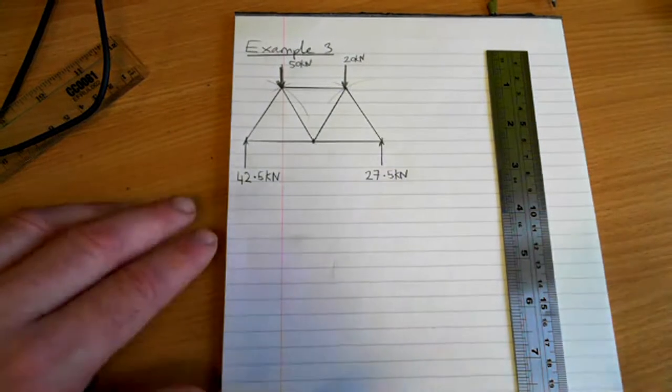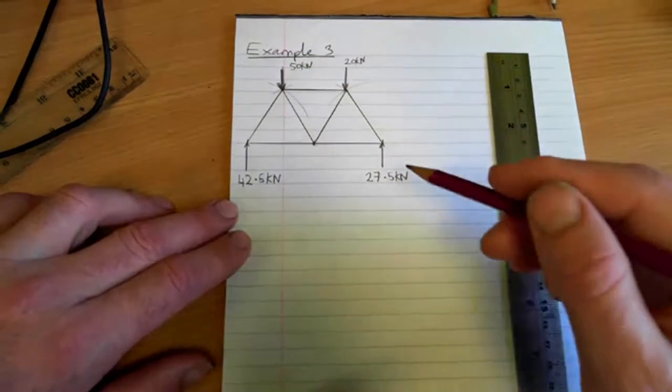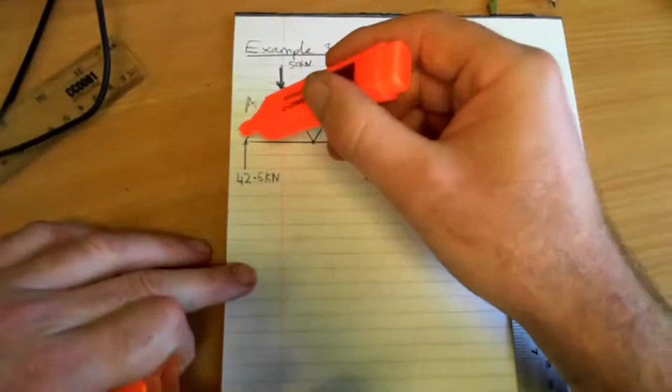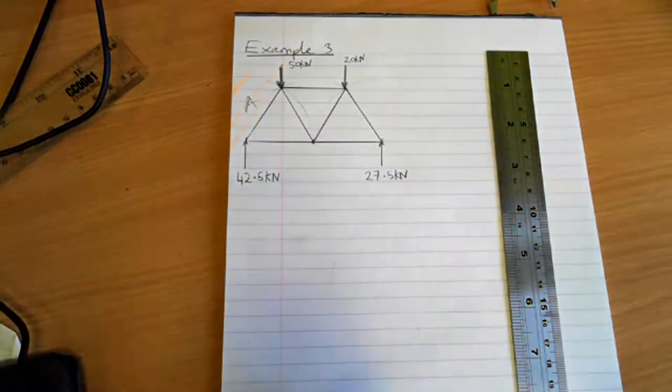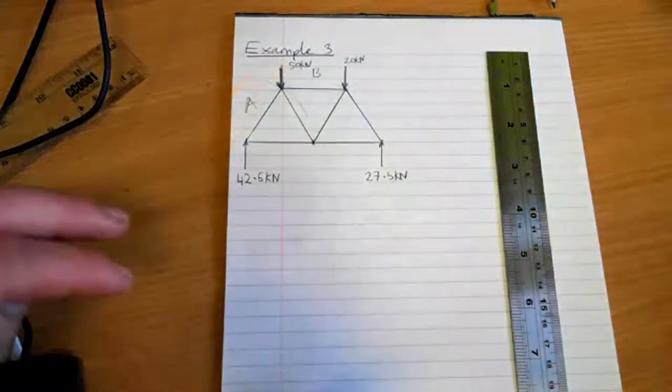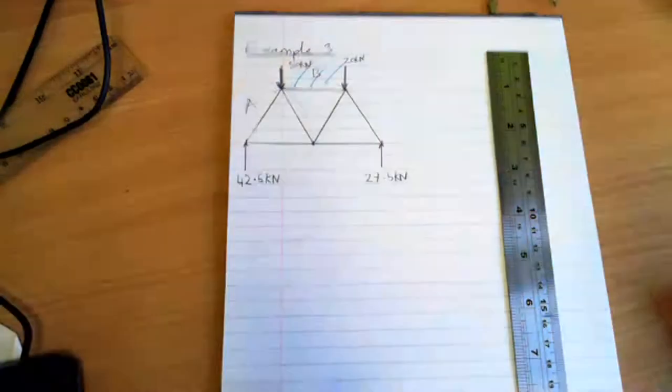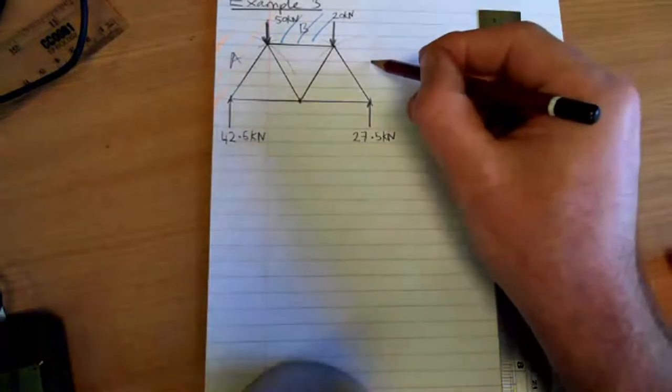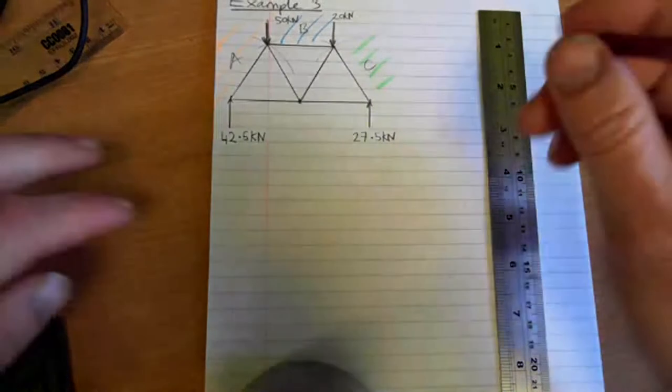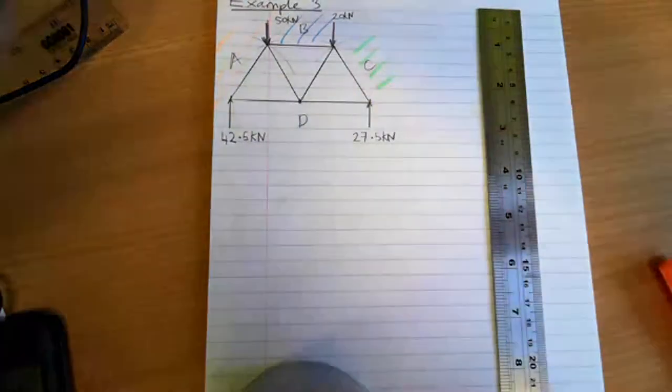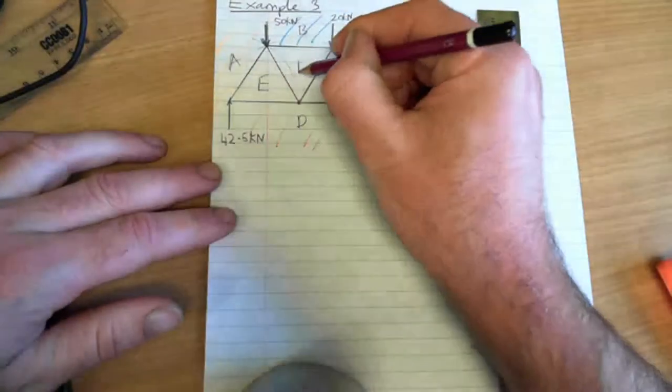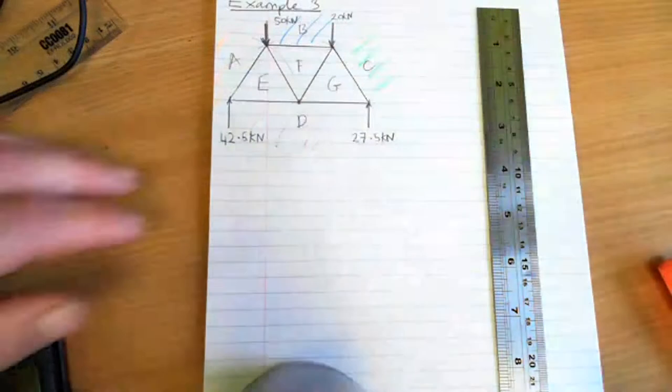So the first thing we do with Bow's notation is to label zones. So I'm going to call this zone A, I'm going to use a highlight pen to emphasize that, so it's everywhere in that zone there. B, between these two forces vertically downwards. C, D, I think you get it now, E, F, G.